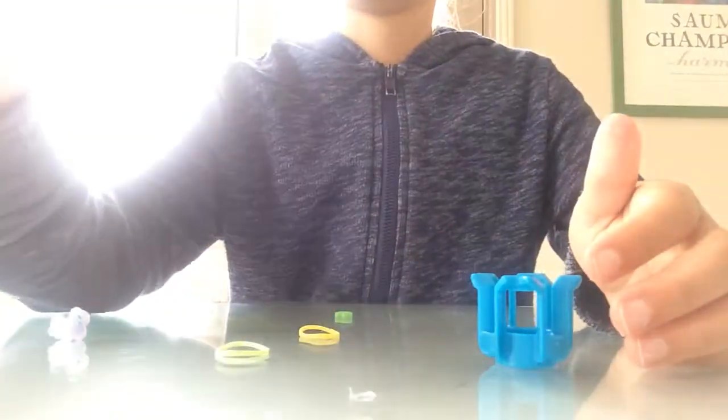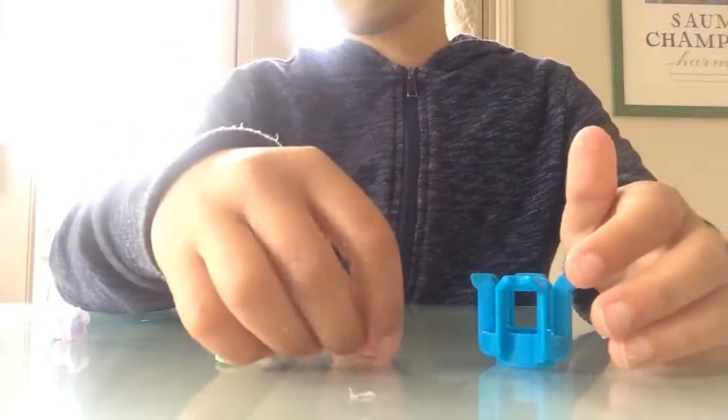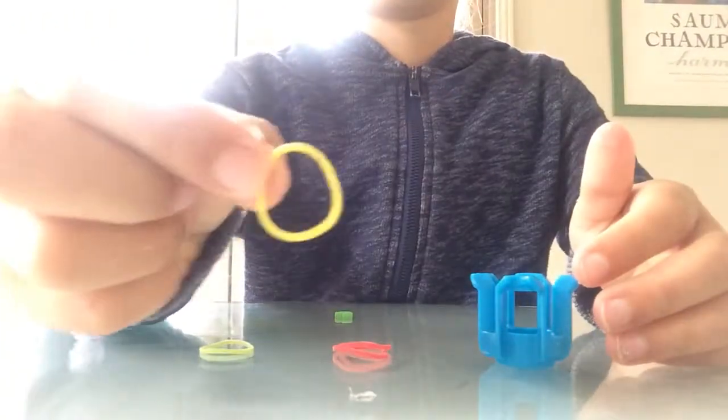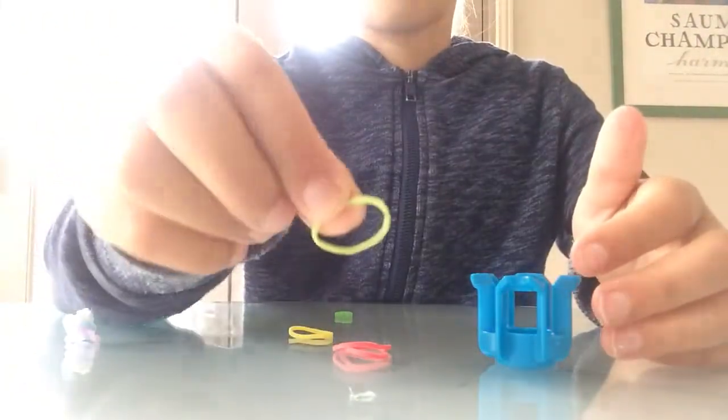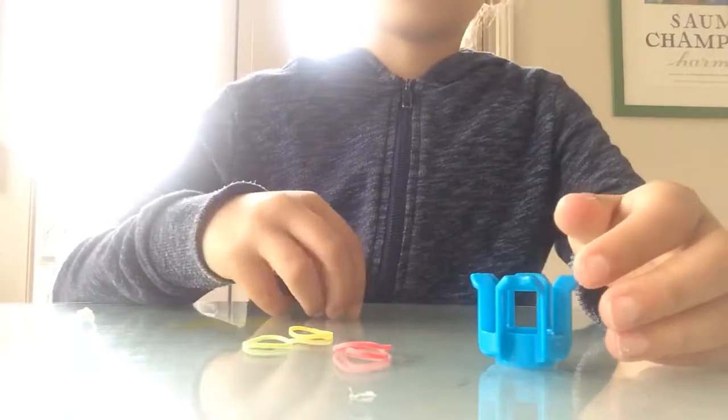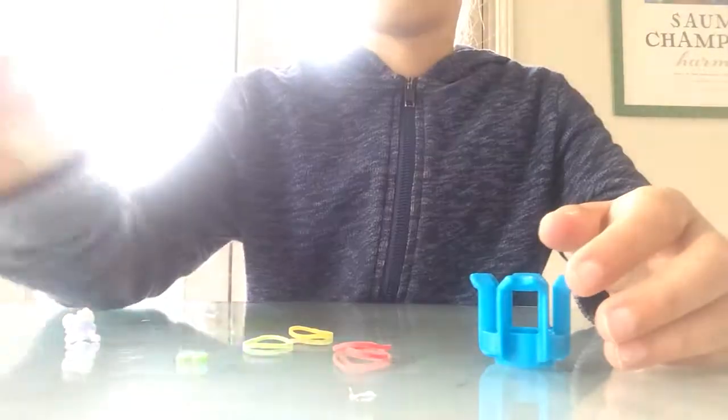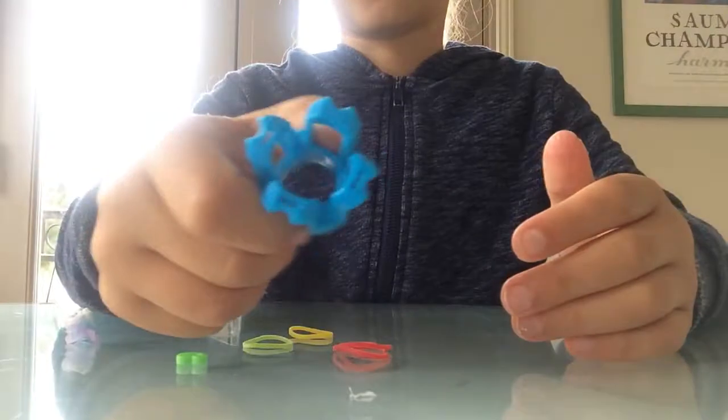So you will need two bands for the outside. You can use one but it looks better with two. The band for the inside and the stem. You will need the c-clip to hold it and then the finger loom.